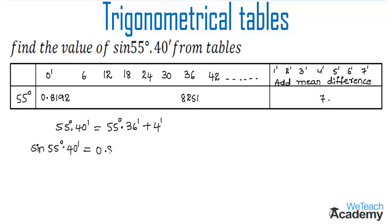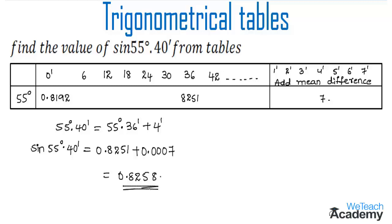The value of sin 55 degrees 40 minutes equals the value at 55 degrees 36 minutes, which is 0.8251 — we prefix the decimal point to the table figure. The mean difference for 4 minutes is 7, and prefixing the decimal point gives 0.0007. Adding these together: 0.8251 + 0.0007 = 0.8258.